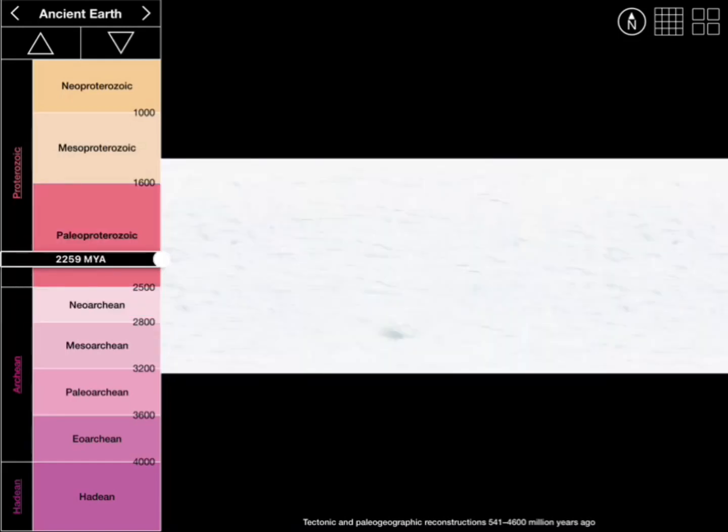And then here's when the earth froze around 2.4 billion years ago, 2.1 billion years ago. Then it froze again twice between 750 and 635 million years ago.